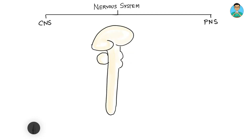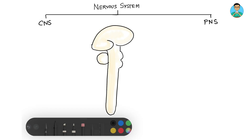Hello everyone, the Nerd Medic here. In this video series we will learn about neuroanatomy and neurophysiology. This is the very first video of the series, so let's start by learning a few basic terminologies we will be using throughout the discussion. The nervous system has two basic components: the central nervous system and the peripheral nervous system. The central nervous system comprises the brain and the spinal cord.